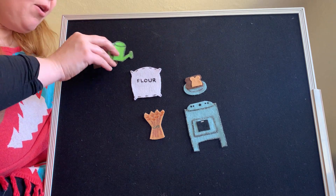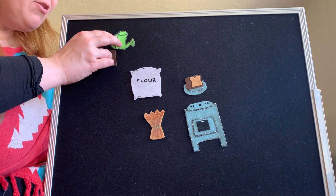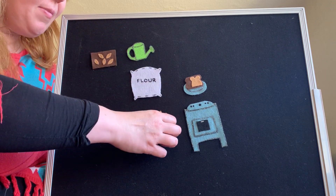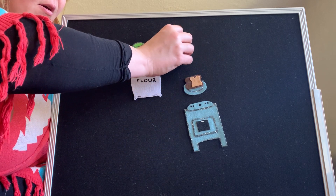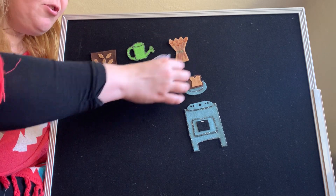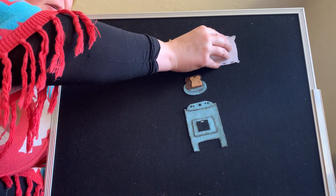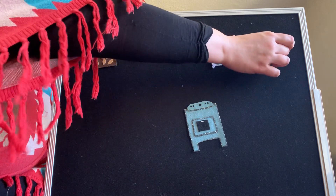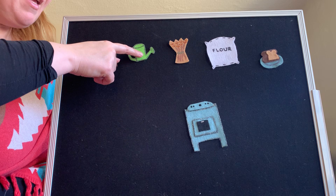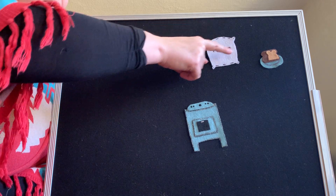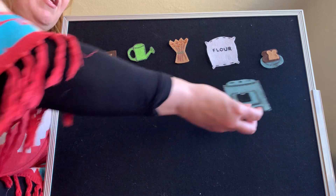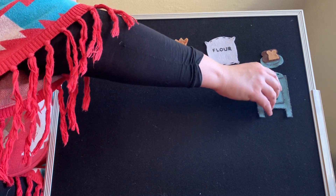Let's show this as a sequence. The seeds are the grains of wheat, watering them, the wheat stalks that are threshed, the flour, and the bread. First, second, third, fourth, fifth. And of course, to bake the bread, you'll need the oven right here.